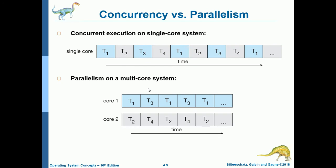Let's compare concurrency and parallelism. For concurrent execution on a single-core system, your processor has only a single core — a single brain. The blue threads here belong to process P0 and the gray threads to P1. To execute concurrency on a single-core system, there is context switching between threads of P0 and P1 — they execute alternately: P0, then P1, then P0, then P1, and so on. That is concurrency.